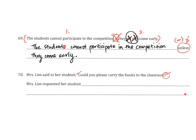So let's transform. Mrs. Lim requested her student. When you see the word 'requested', you must always pair it with 'requested her student to do something'. So I cancel away 'could', because I'm no longer asking a question — 'could' isn't required anymore. So what did she request her student to do? Mrs. Lim requested her student to — and 'you' is no longer there, because it's 'her student' now — carry the books to the classroom.